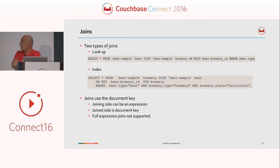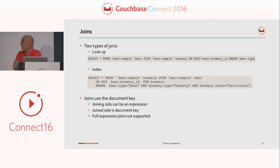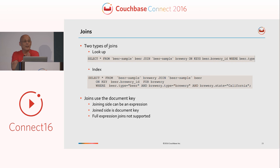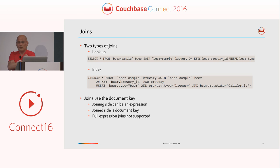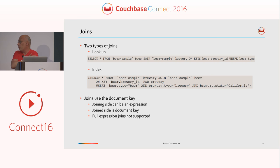In terms of joins, there are two types: straight lookup joins and index joins. The important thing to note is that one side of the join is the document key. On the joining side, you can build whatever expression you want as long as it generates the document key of the document you're looking for. On the join side, you have no other choice — at this moment we do not support full expressions, but it's being considered.